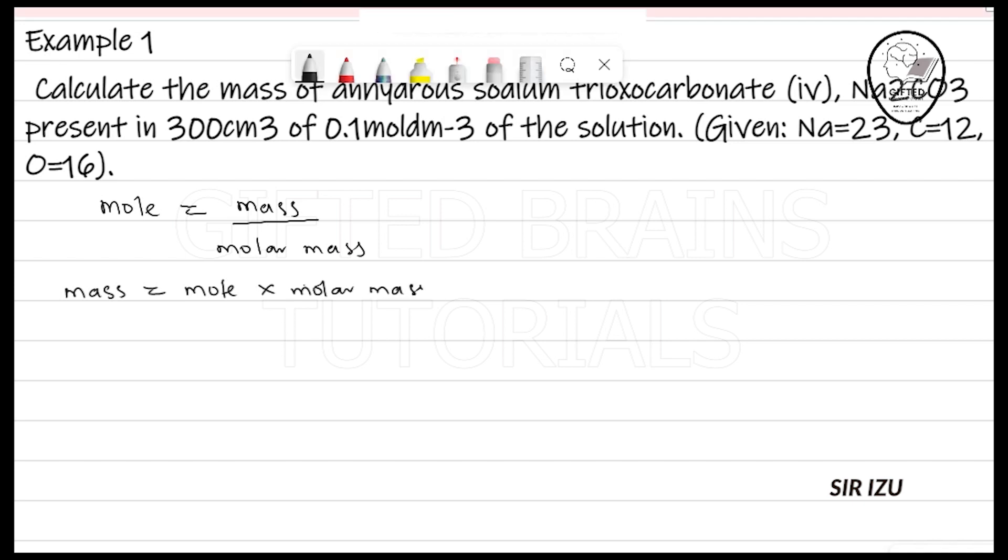The question is not one that finds it difficult to get its molar mass. Molar mass of Na2CO3 equals sodium is 23 times 2, plus carbon is 12 times 1, plus oxygen is 16 times 3. So at the end of the day, this will give us 106 grams per mole. So to get our mass, it is mole multiplied by 106.